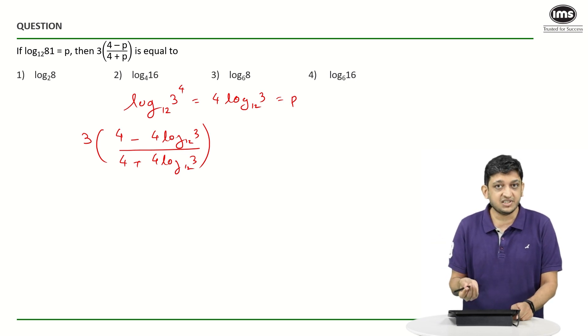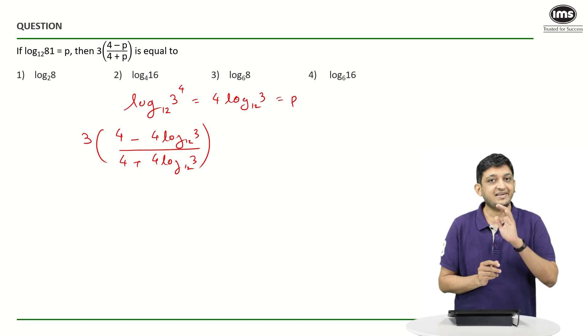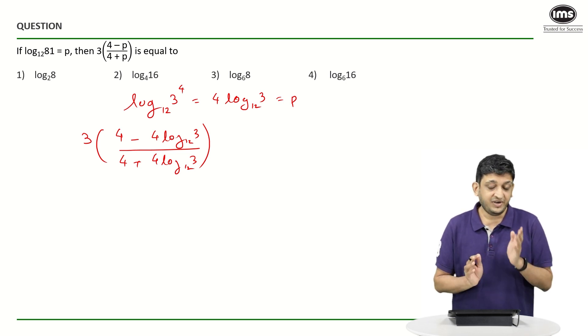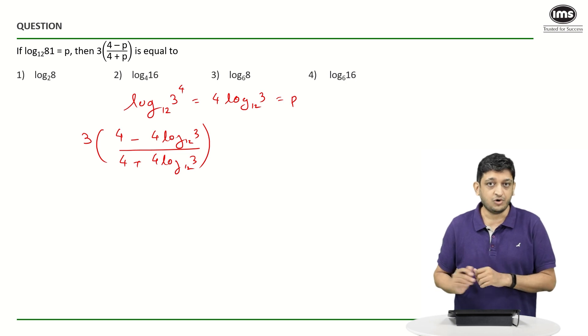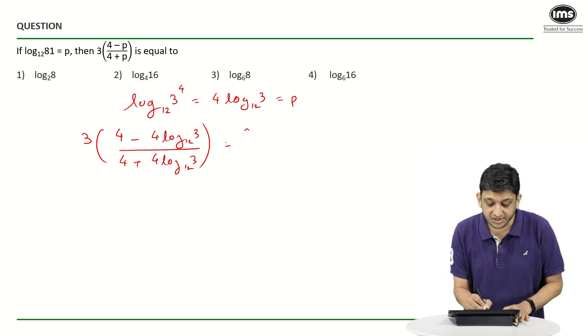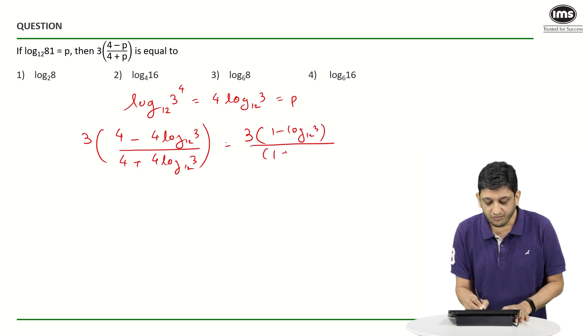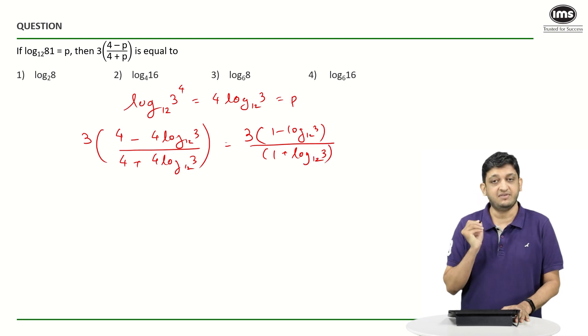If I simplify this further, what I can do upfront is I can cancel out the 4s from the numerator and the denominator. If I take a 4 common from the numerator and I take a 4 common from the denominator, I will be able to cancel those 2 4s out. What remains here is going to be 3 times 1 minus log 3 to the base 12 divided by 1 plus log 3 to the base 12.